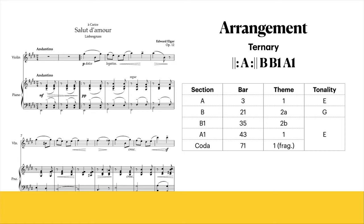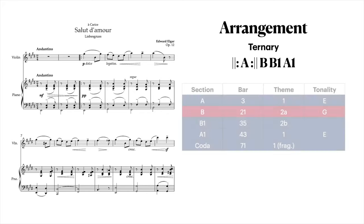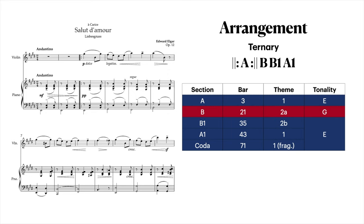The composition Salut d'amour is in a ternary structure where the outer sections use similar melodic material. These outer sections also usually share the same key, particularly in the music of this period and earlier. Looking at the table we can see that this is true of Elgar's Salut d'amour: the outer sections are in E major while the middle section is in G major, a chromatic mediant — the flattened third scale degree relationship with E major. The outer sections use the same melodic material, albeit slightly varied, while the middle section presents new melodic material. However, Elgar links the two themes of the A and B sections together, which we'll look at in the next section.